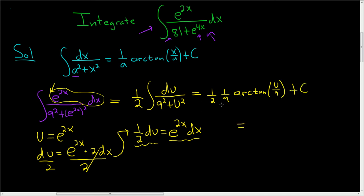So this is equal to, well let's see, 1 half times 1 ninth is 1 eighteenth, and then we have arctan of, well, u was e to the 2x. There it is. So this is e to the 2x over 9, and then plus our constant c. And so that is the final answer.